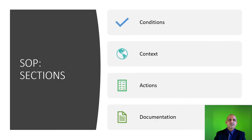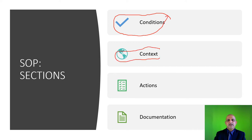The sections of the SOP are as follows: an SOP has conditions, context, specific actions, and documentation. Let us look at these sections one by one.